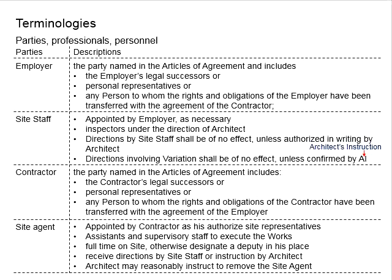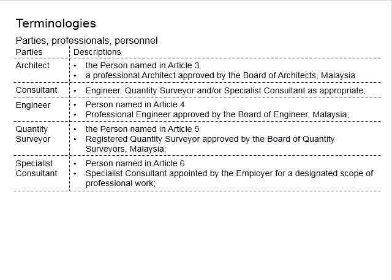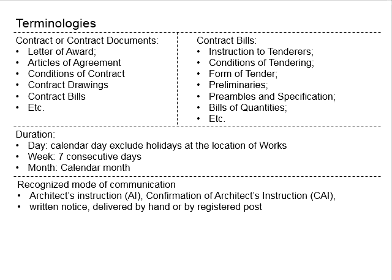In the previous videos, we talked about the terminology related to the people — employer, site staff, contractor, site agent, nominated subcontractor, nominated supplier, appropriate authorities, service provider, architect, consultant, engineers, quantity surveyors, and specialist consultant. In these videos, we're going to discuss the other terminology which can be seen in the PAM contract or typical tender document adopting the PAM contract.